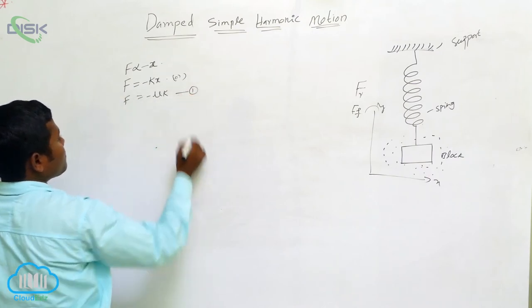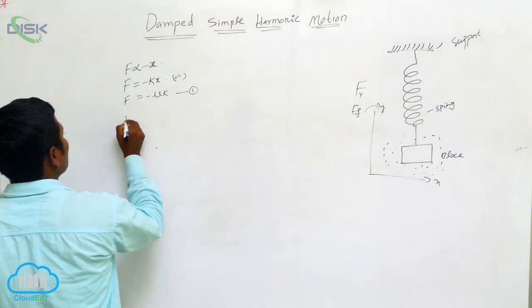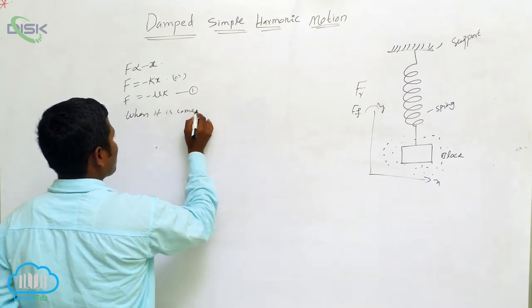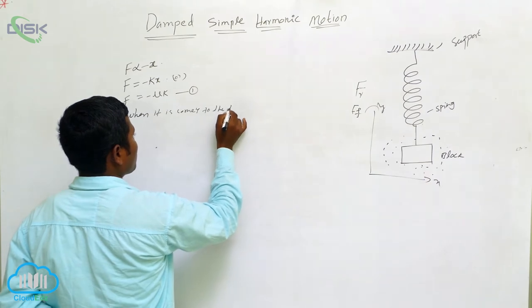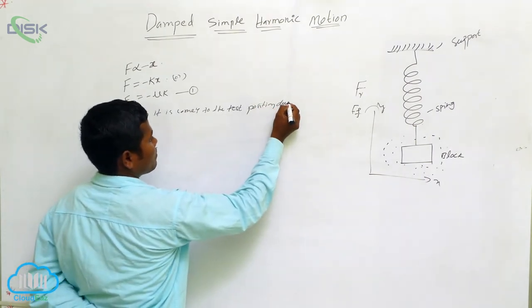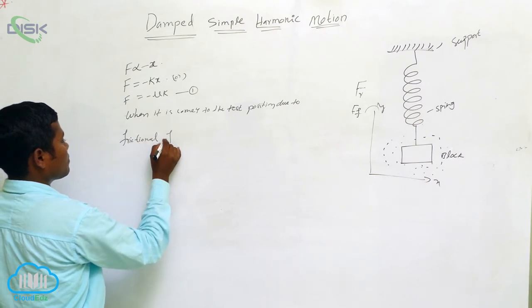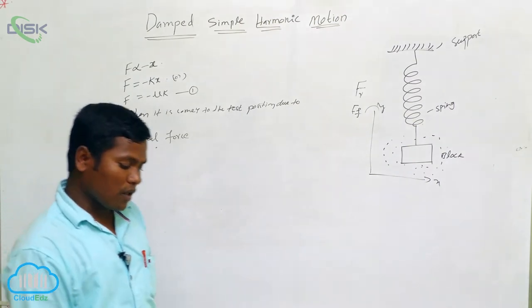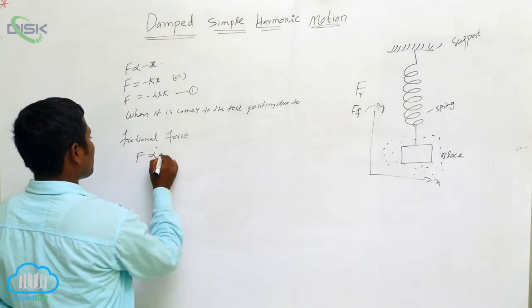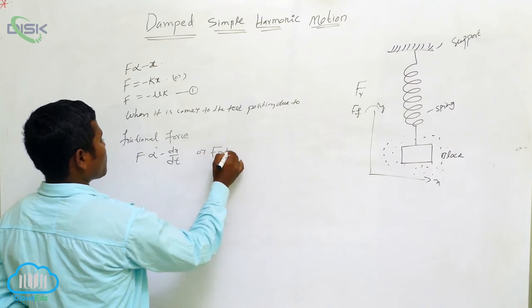The second force acting causes the pendulum to come to rest. That is the frictional force, which opposes the motion. The frictional force is directly proportional to velocity: F ∝ -dx/dt, or equivalently F ∝ -v.